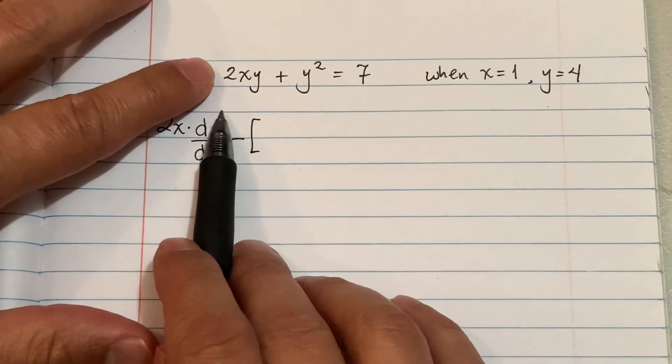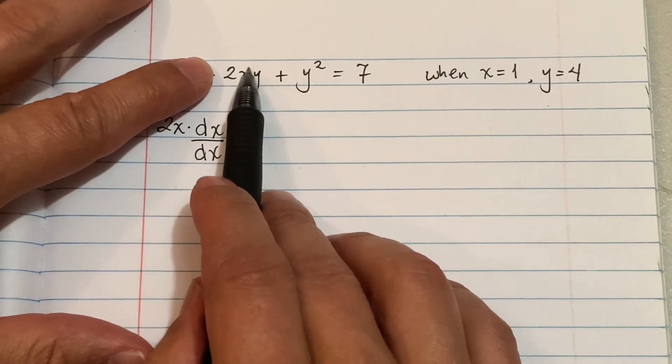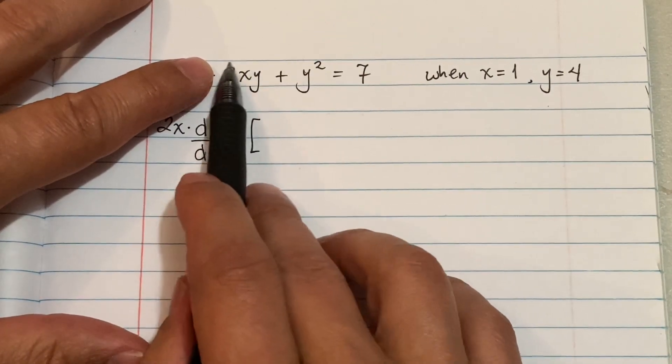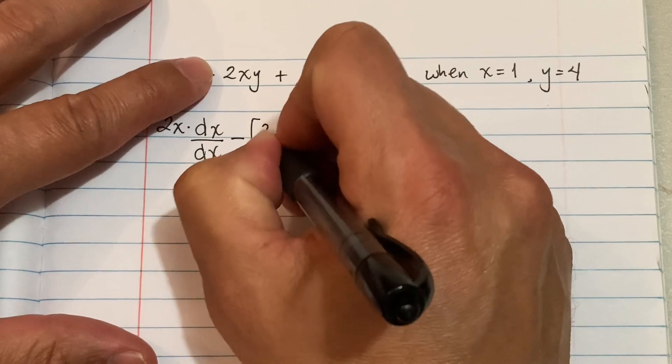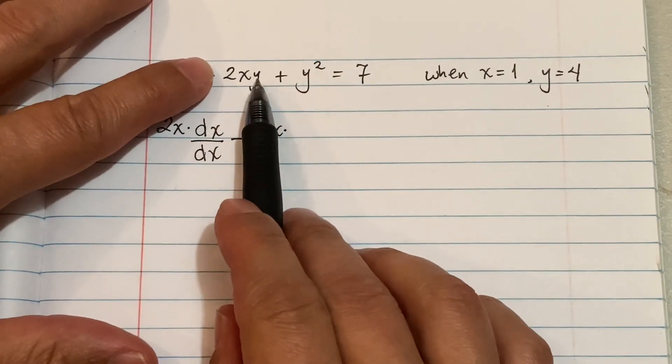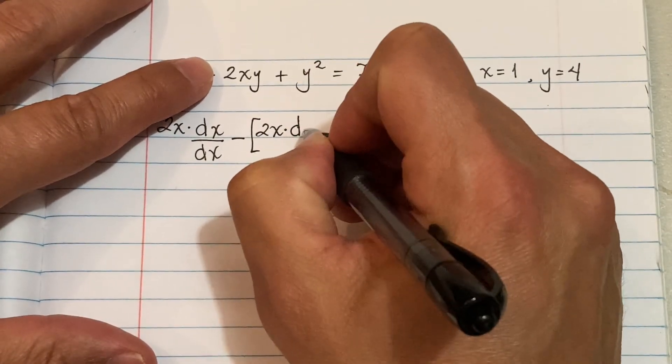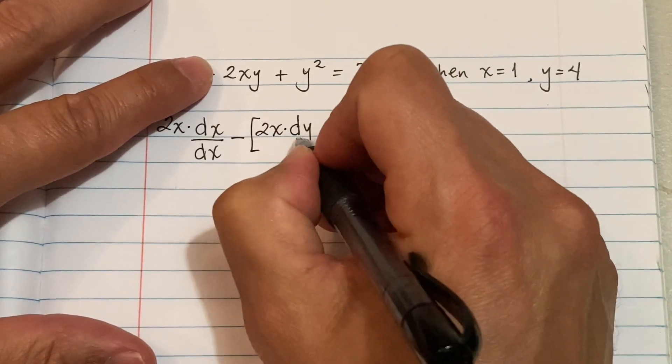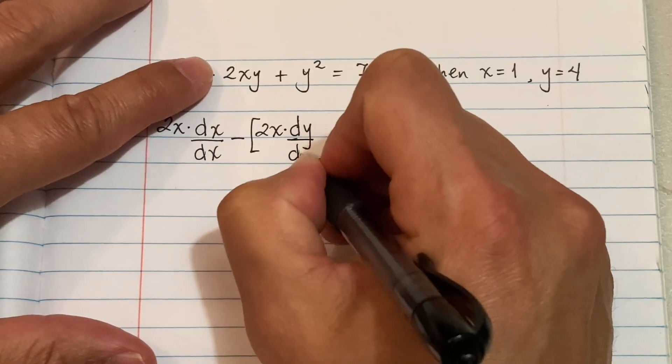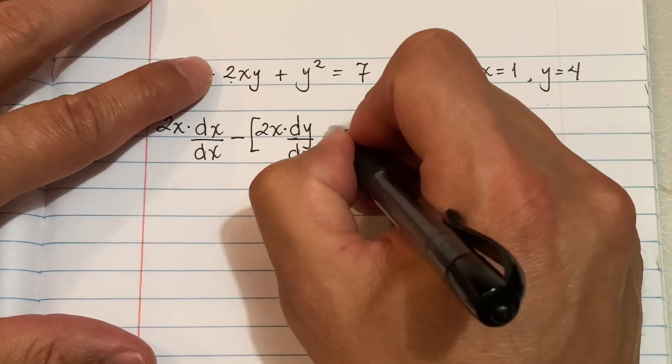Remember this is gonna be the product rule. First you write your first function times the derivative of the second—the derivative of Y with respect to X, so you can put dy/dx—so first times the derivative of the second, plus the second...